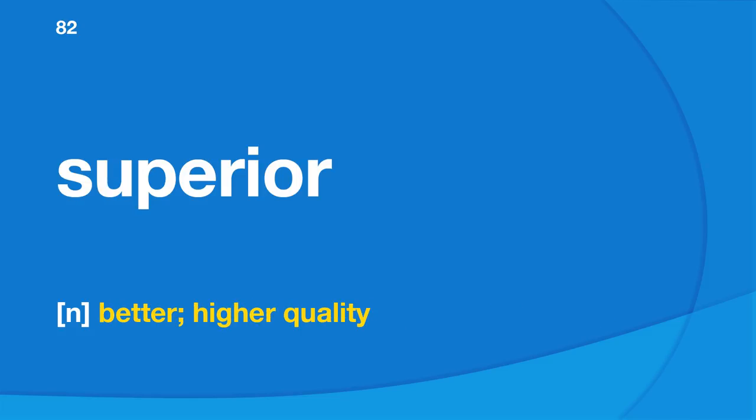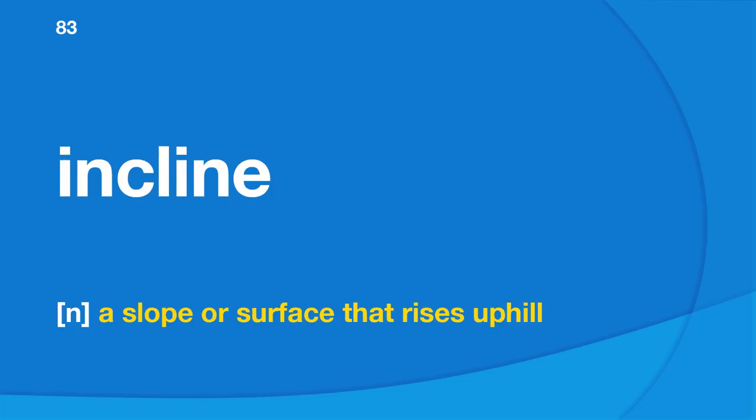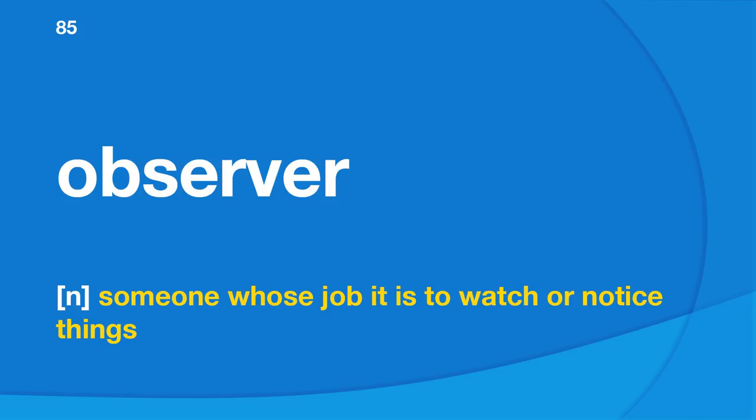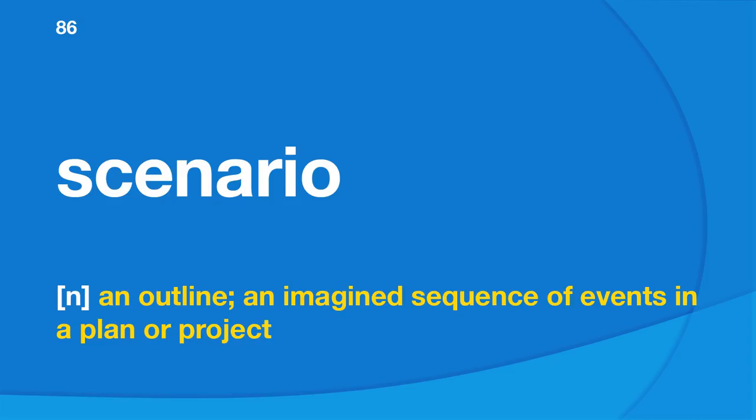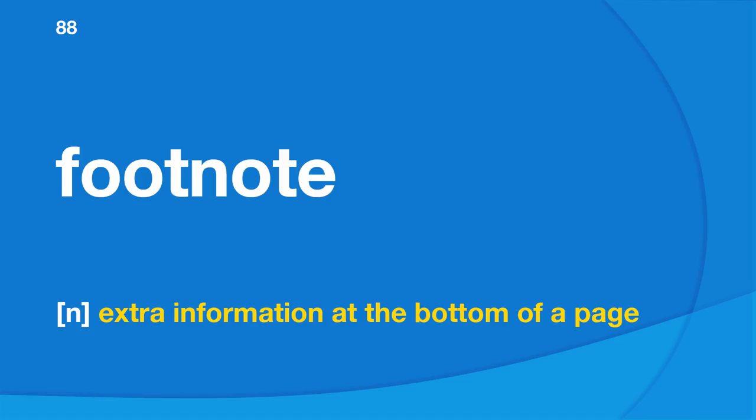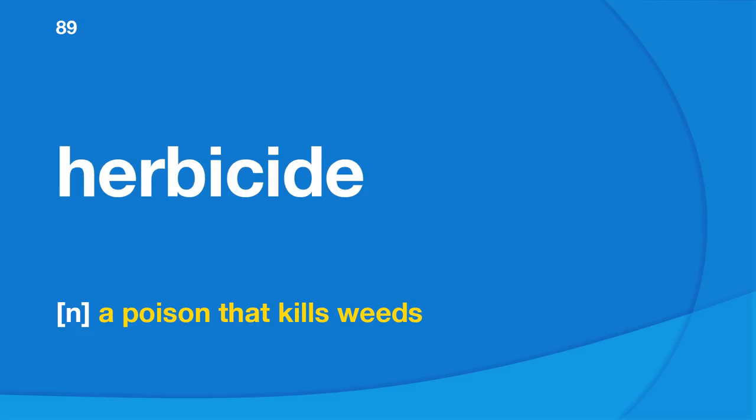Superior: better, higher quality. Incline: a slope or surface that rises uphill. Thread: a long, very thin, soft material used to join or make cloth. Observer: someone whose job it is to watch or notice things. Scenario: an outline and imagined sequence of events in a plan or project. Transmit: to broadcast by using electrical signals to a radio or TV. Footnote: extra information at the bottom of a page. Herbicide: a poison that kills weeds.